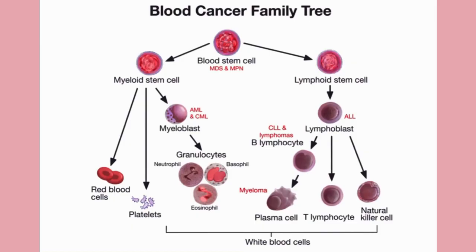So this is the blood cancer family tree. All of our blood cells - platelets, red blood cells, T cells, B cells, plasma cells, and so forth - they all come from the same stem cell. Which leukemia we have depends on where the mutation is and which cell is proliferating. If we're more up here with the immature cells, we're likely dealing with an acute leukemia, whereas further down we're more likely dealing with a chronic leukemia, because chronic leukemias tend to be more mature cells.